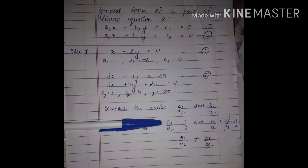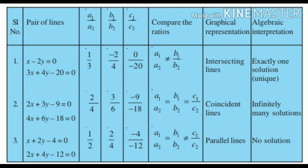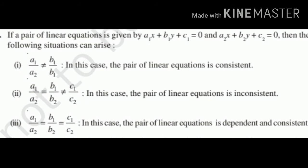All the equations we examined were converted into the form a1·x + b1·y + c1 = 0 and a2·x + b2·y + c2 = 0, and their ratios were compared using this table — which is important and must be remembered. One more thing to keep in mind: equations that give a solution are called consistent — both intersecting and coincident lines give consistent solutions — while parallel lines give inconsistent solutions.